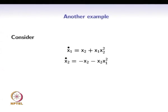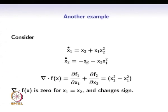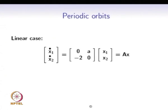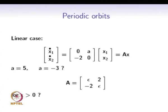Now consider a modified example where we have epsilon along the diagonal entries. For this particular A with epsilon along the diagonal, we can ask what can we say about the equilibrium point. When epsilon > 0 the equilibrium point (0,0) is an unstable focus, and when epsilon < 0 we have a stable focus.